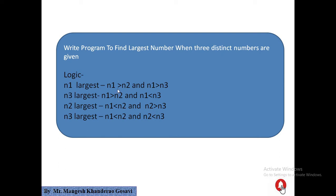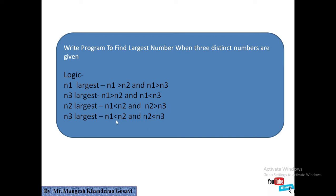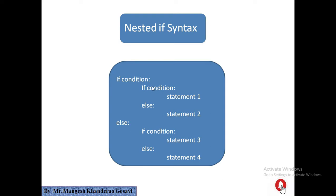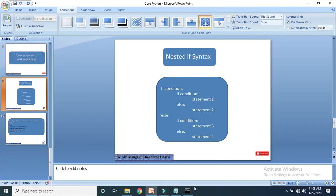When n1 is less than n2 and n2 is greater than n3, then n2 is largest. And there are conditions for n3 being largest as well. We have to place all these conditions into the nested if syntax. If n1 is largest, then n1 greater than n2 and n1 greater than n3 must both be true, and then we write that n1 is largest.